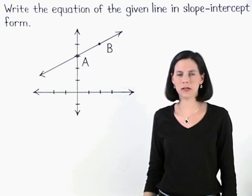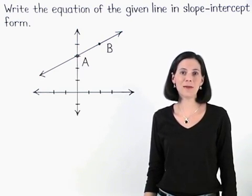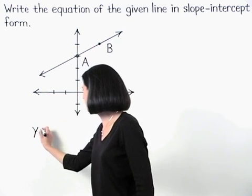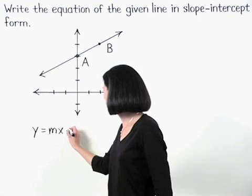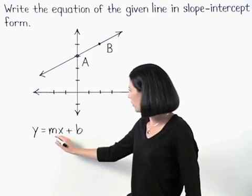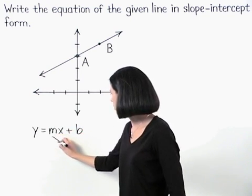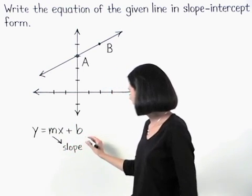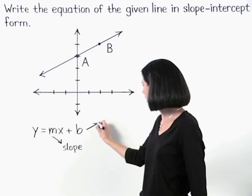Remember that slope-intercept form is the same thing as y equals mx plus b form, where m represents the slope of the line and b represents the y-intercept.